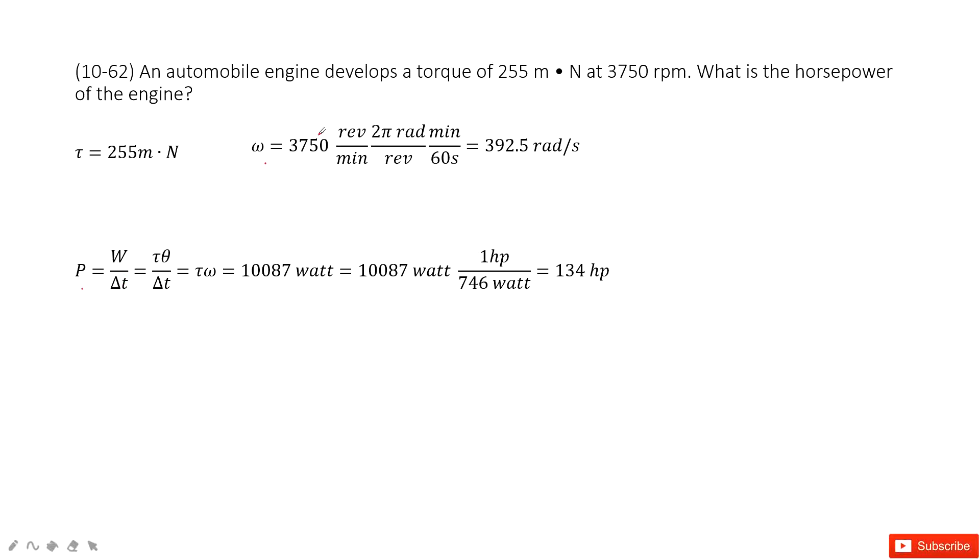And then for the rotational motion, what is the work? The work we can consider as torque times theta. Agree? This is our textbook. Divide by delta t. We can see theta divided by delta t is what? It's angular velocity, omega.